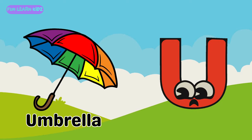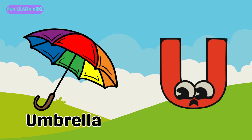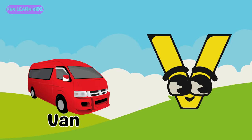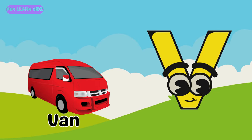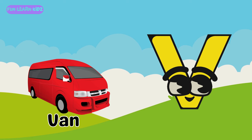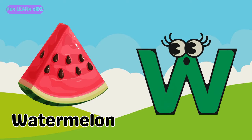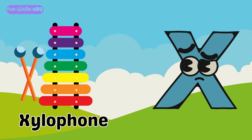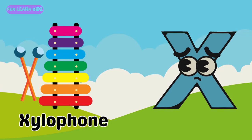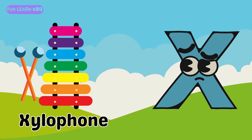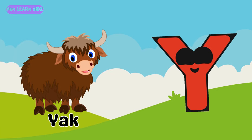U for Umbrella. V for Van. W for Watermelon. X for Xylophone. Y for Yak.